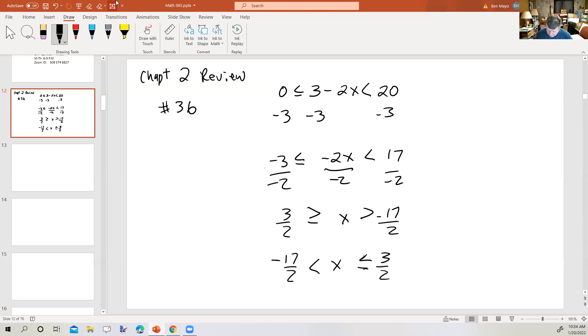So there's the answer in just regular notation. Now, what would that look like in interval notation? You'd have parentheses, negative 17 halves, comma, 3 halves, bracket. The fact that it does not include the equal sign here is why we use parentheses. The fact that it does use the equal sign there is why we use brackets. So if it doesn't include equals, you use parentheses. If it does include them, you use brackets.